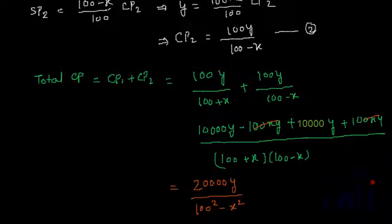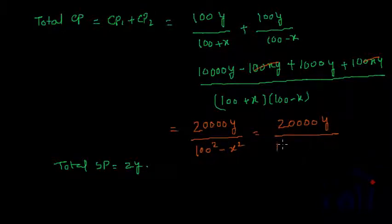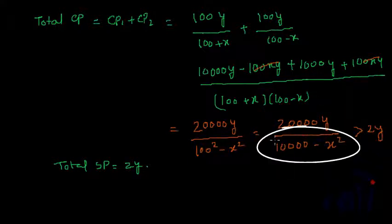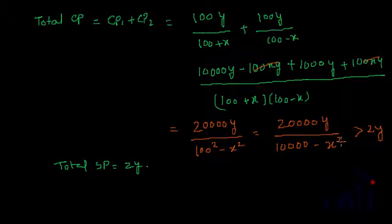Our total sale price was 2y. Looking at the total cost price, 20,000y/(10,000 − x²), dividing 20,000y by 10,000 gives 2y, but the denominator is actually less than 10,000 since x is positive and x² is positive, making 10,000 − x² less than 10,000. Reducing the denominator increases the value, so the total cost price is definitely more than 2y.